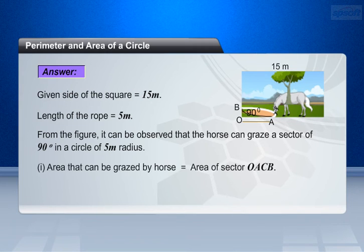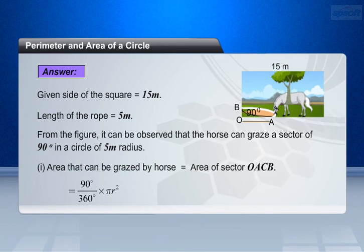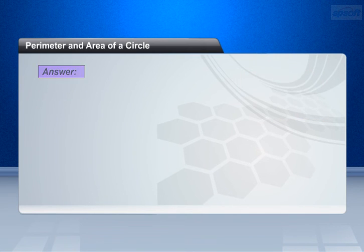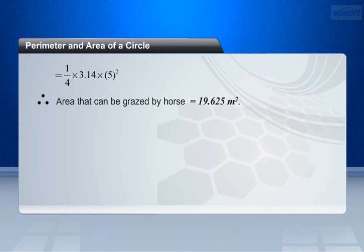Area that can be grazed by horse equals area of sector OACB. This is equal to 90 degrees by 360 degrees into pi r square. This is equal to 1 by 4 into 3.14 into 5 square. Therefore, area that can be grazed by horse with 5 meters long rope equals 19.625 meter square.